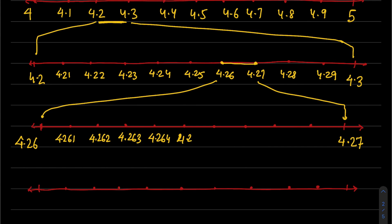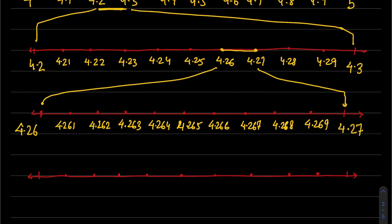Between 4.26 and 4.27, the numbers will be 4.261, 4.262, 4.263, 4.264, 4.265, 4.266, 4.267, 4.268, and 4.269. The number we need, 4.2626, will be between 4.262 and 4.263.